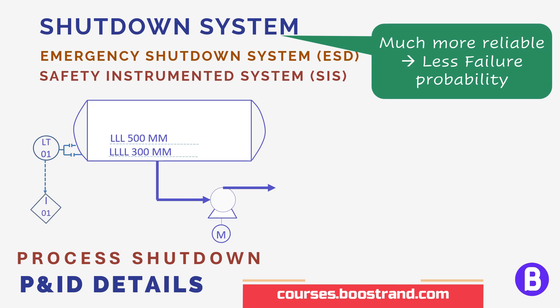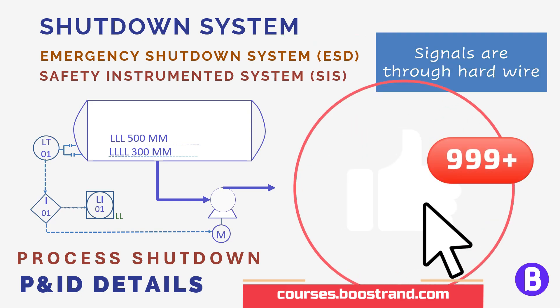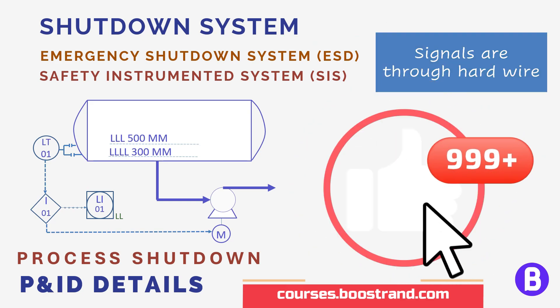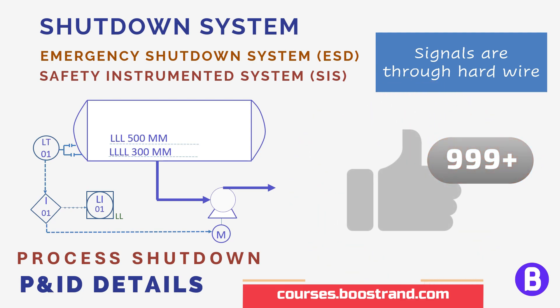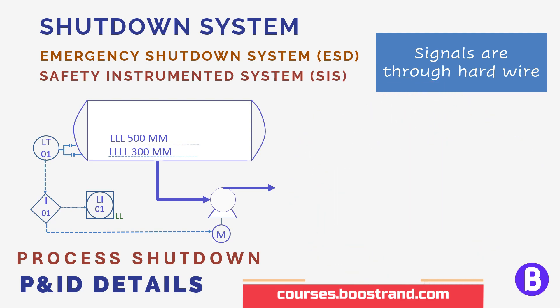The shutdown system shall stop the pump. We can still send an indication to the operator in the DCS, along with a low level or low-low level alarm. Here, the type of signal is different — it's not a serial link, as we need a more reliable signal. That's why a hardwire signal is used.